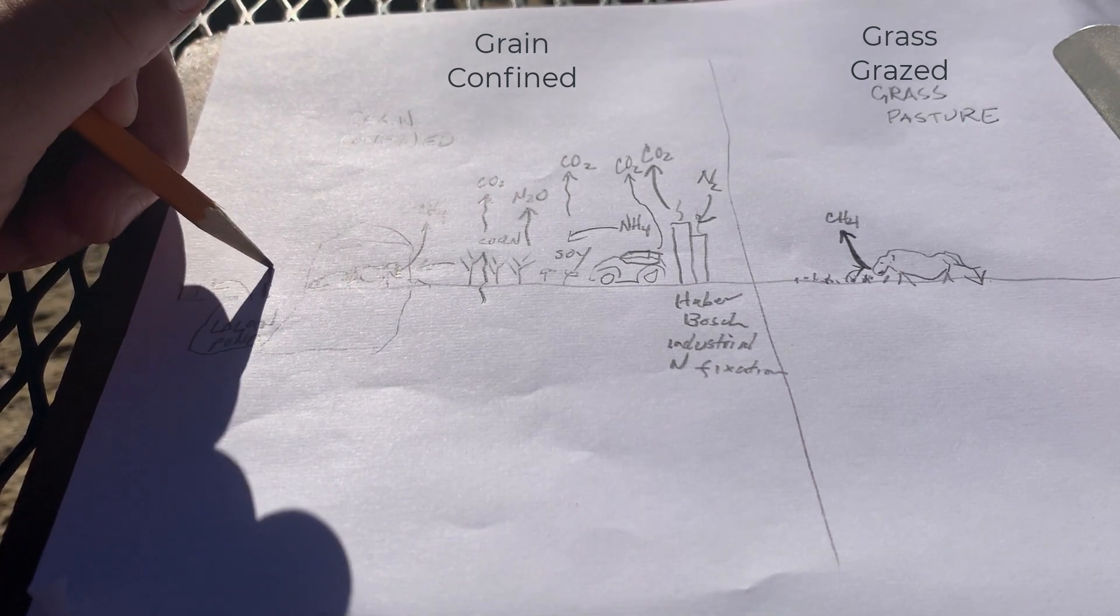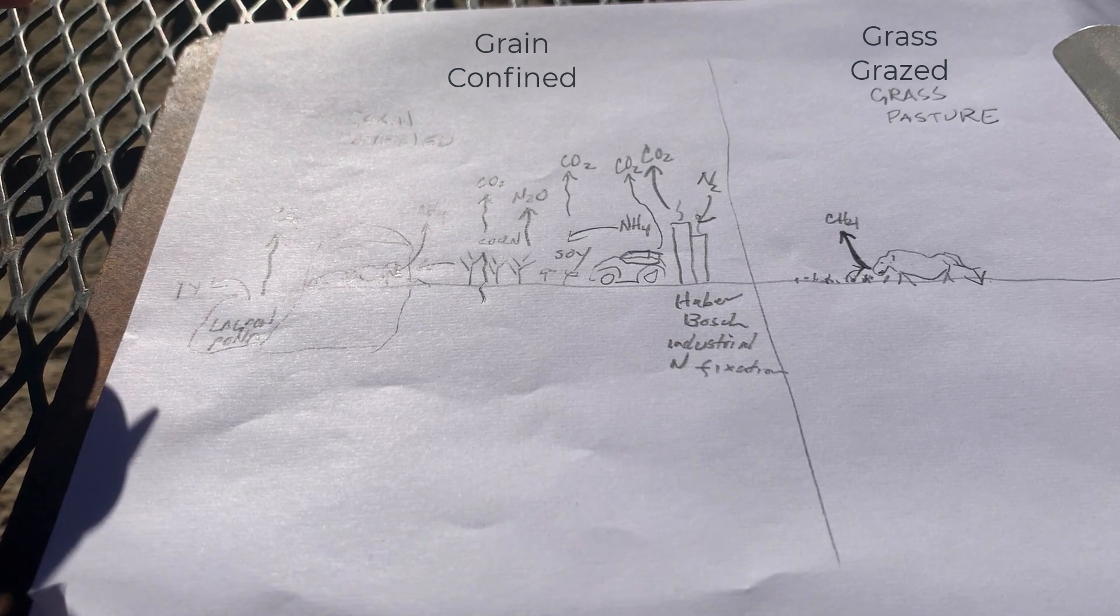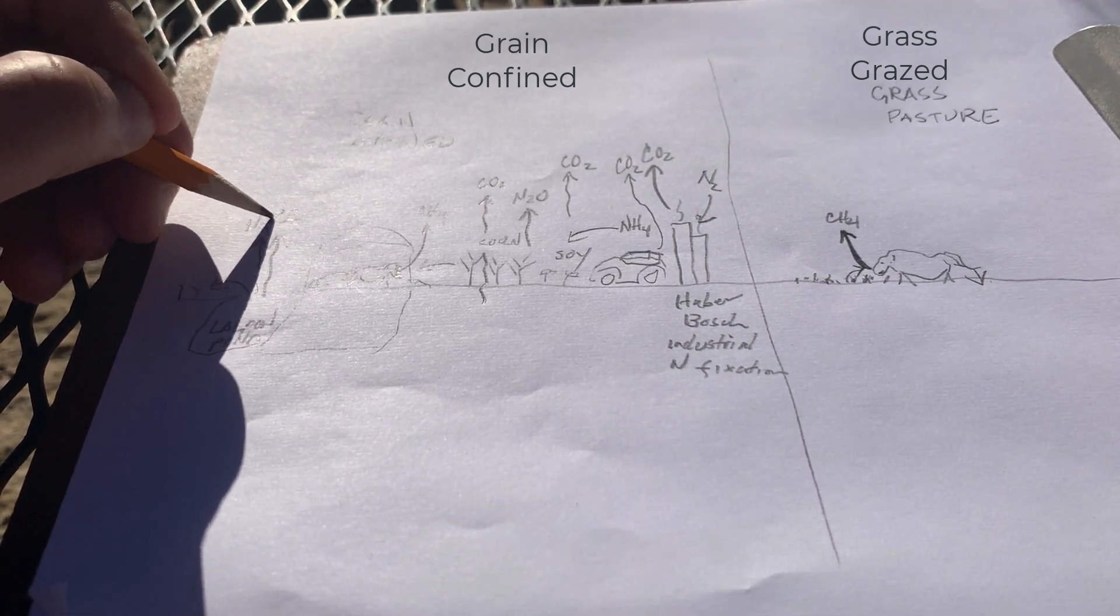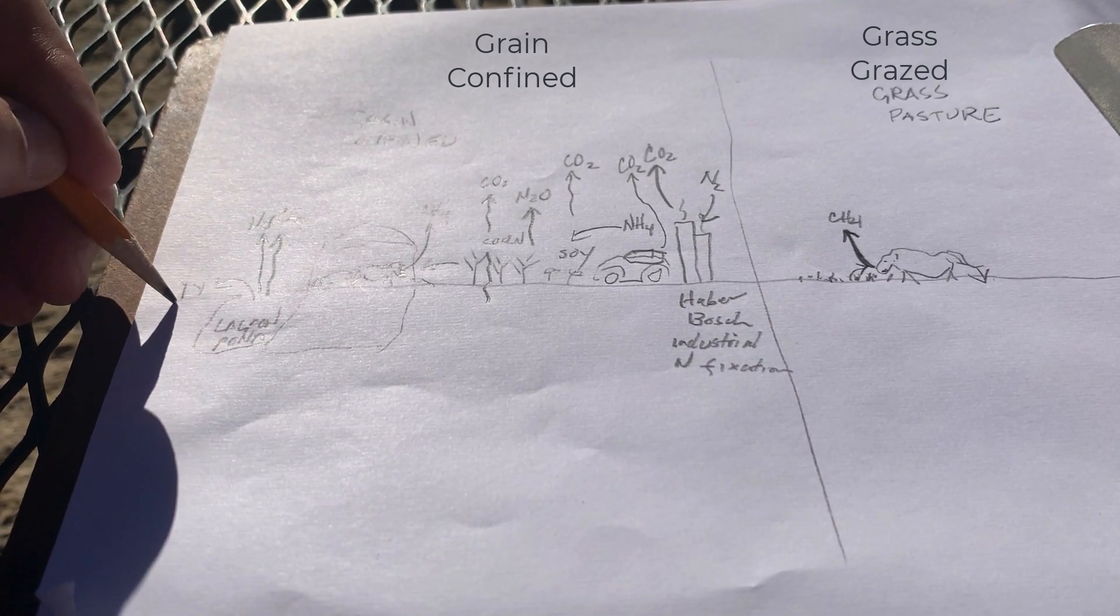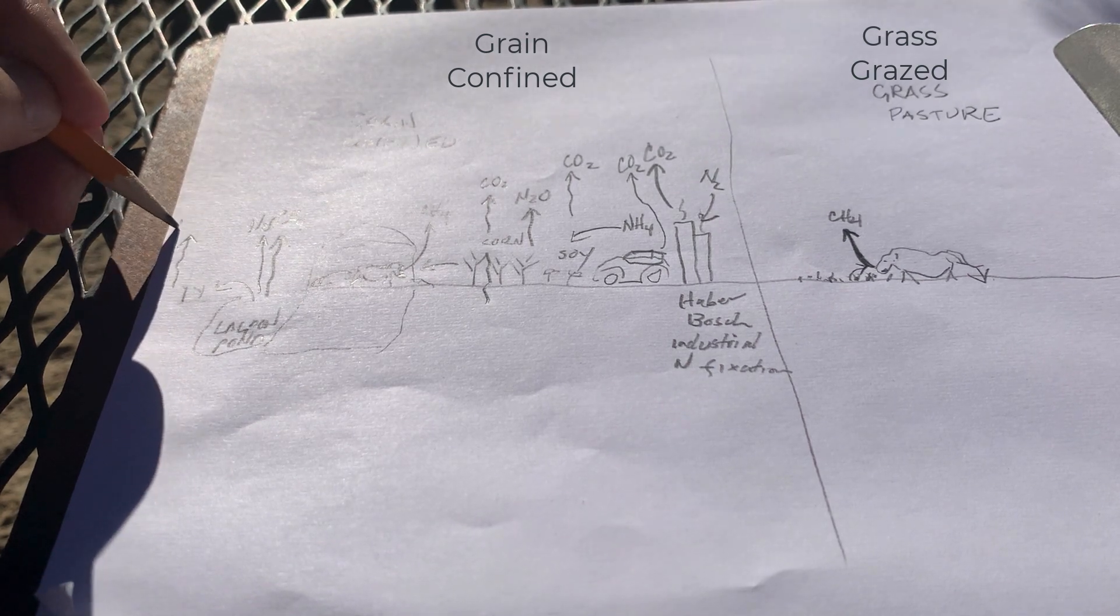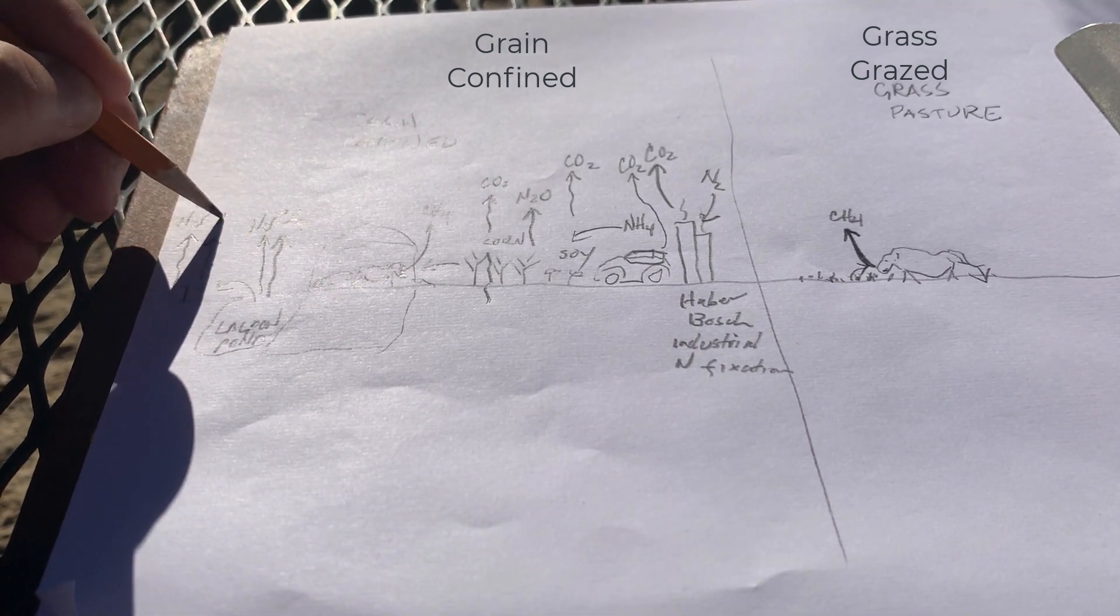These lagoon ponds are sources of methane that's coming off of the lagoon and also sources of N2O. And then when we spread that manure back out onto the field, we've got N2O coming off those fields, methane coming off those fields.